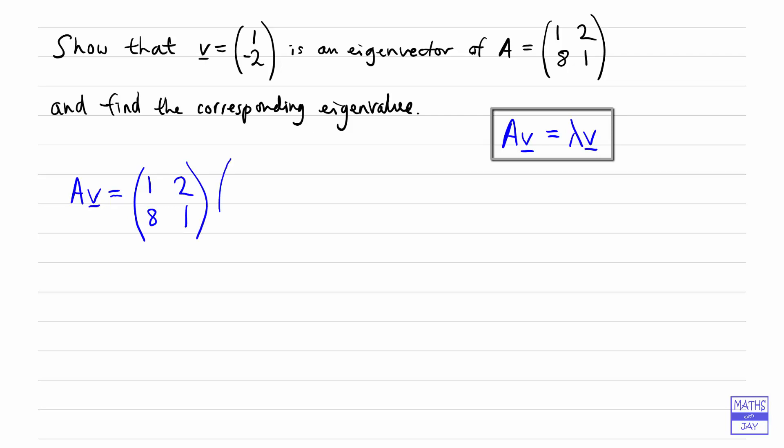So there's the matrix A and then the vector V, and multiplying that out we've got 1 multiplying 1 so 1, and 2 multiplying negative 2 so we're subtracting 4. And then we've got 8 times 1 which is 8, and subtracting 1 times 2 so minus 2. So that gives us negative 3, 6.